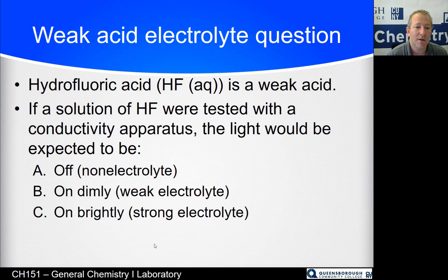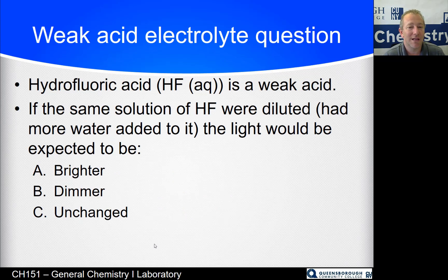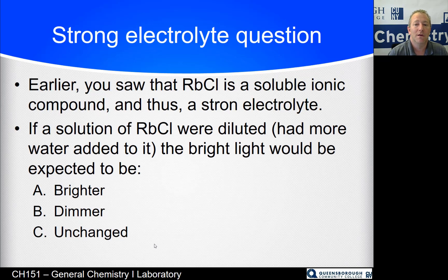Here's a question: HF is a weak acid — when you test it with a conductivity apparatus, is the light going to turn on brightly, dimly, or not at all? And if you moderately dilute a solution of HF, will the light get brighter, dimmer, or remain unchanged? HF being a weak acid will only produce a dim light, and if you dilute it, the light will get brighter. For RbCl — a strong electrolyte already fully ionized — the conductivity will be unchanged upon moderate dilution.